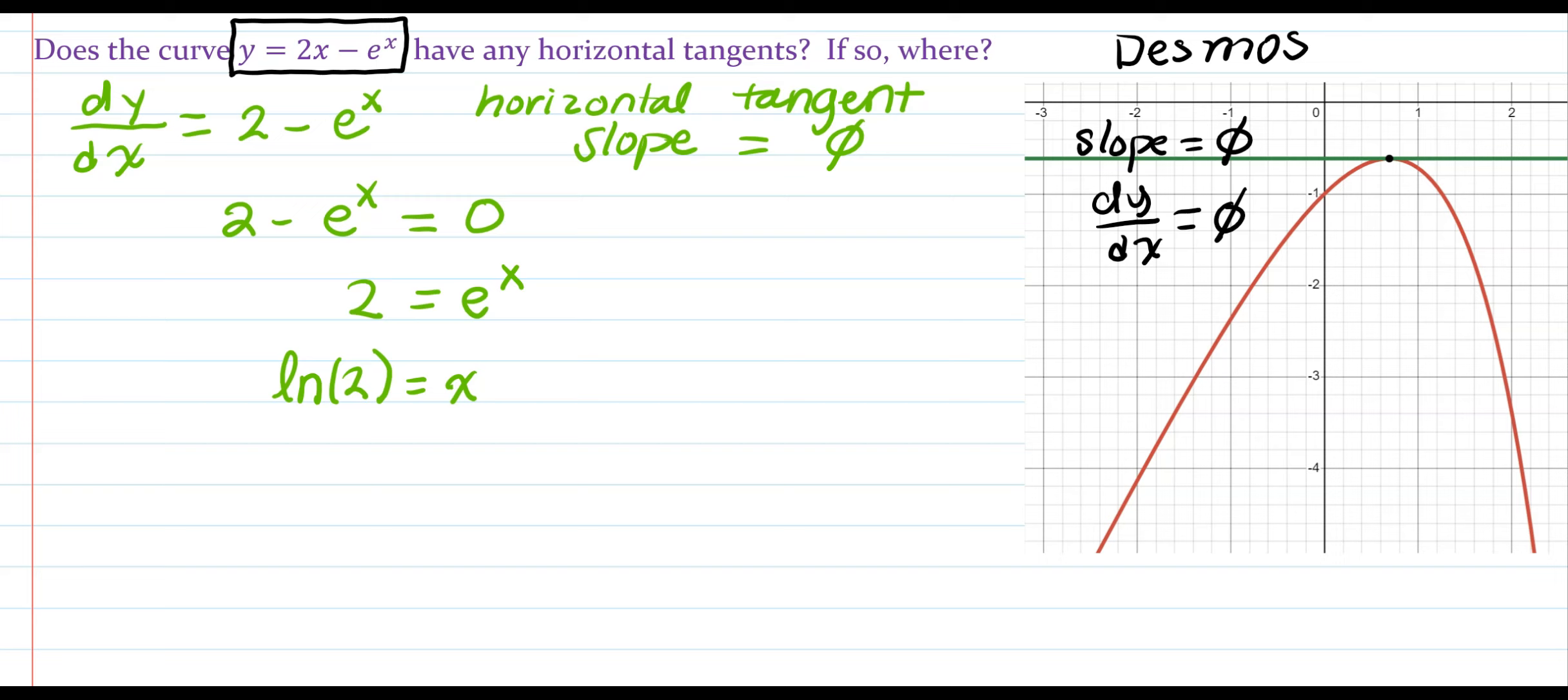So, this right here, the x value at this point is log base e of 2, or we would say ln of 2. And ln of 2 is about 0.7, 0.69, so approximately 0.7, which makes sense in my picture and this here is 1.